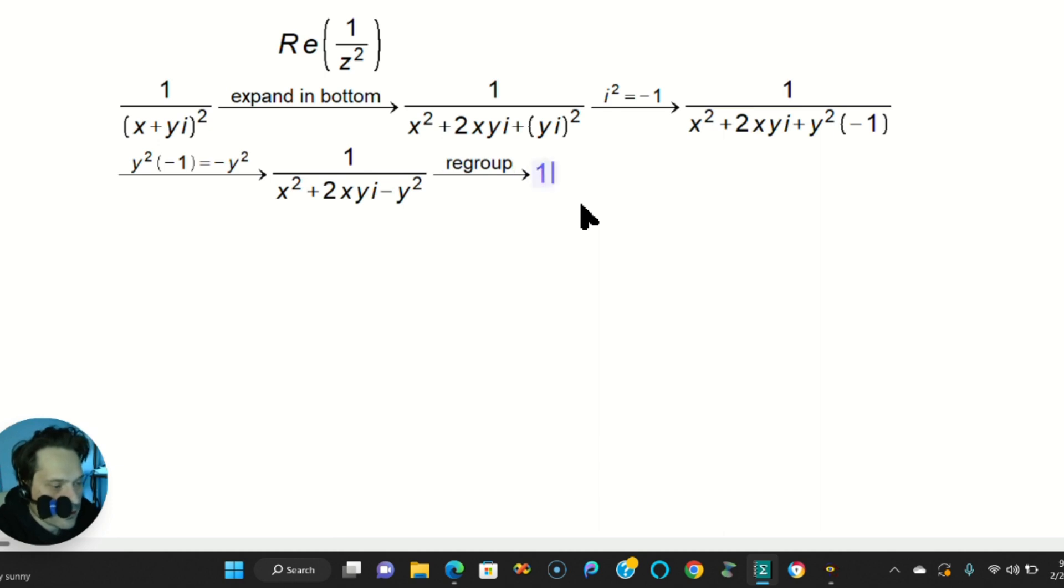What I mean is you're going to have 1 over x squared minus y squared. Look very carefully. 2xyi. So what I'm doing is I'm putting these together. And I'm putting these together right here. Well, the goal. Let's keep the goal in mind. So what's the goal?